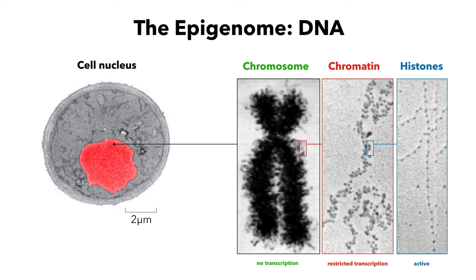Histones can be either grouped together forming lumps of DNA, or as we can see in the picture on the right, relaxed and spread out. The changes in the way DNA is packaged is used for cell division when whole chromosomes need to be moved around, or to regulate what code is more or less accessible for transcription.